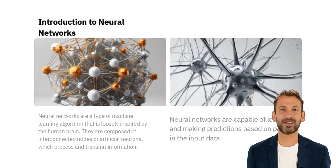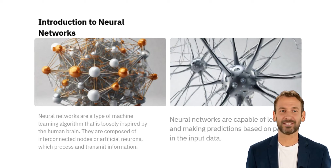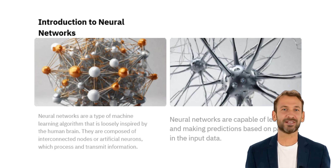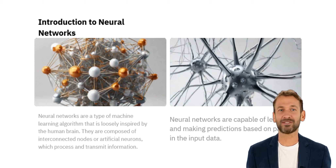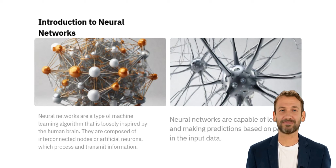Neural networks are a form of artificial intelligence that have the ability to learn and make inferences from input data. They are constructed out of artificial neurons that are connected to each other and are responsible for processing and transmitting information. Neural network training enables the networks to detect patterns from the given data, which it can use to generate its own predictions. In recent years, neural networks have become more popular and are being employed for a wide range of applications.